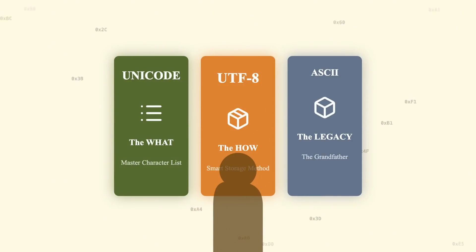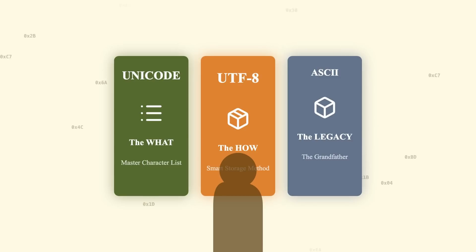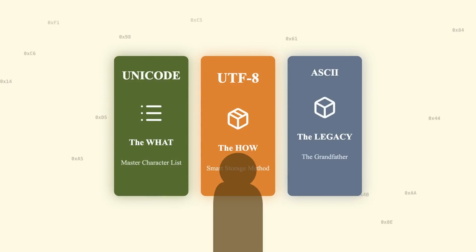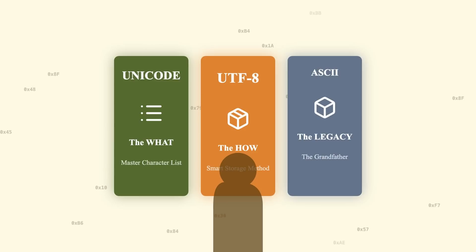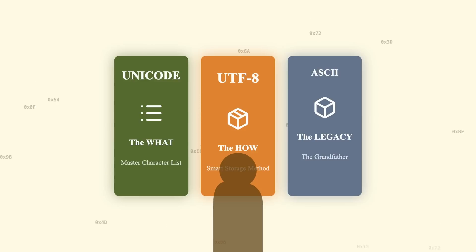In short: every character has a number — that's Unicode. UTF-8 cleverly stores those numbers using 1 to 4 bytes. And garbled characters mean someone messed up the encoding. Please like and share if you found this useful — subscribe for more, and see you in the next one.